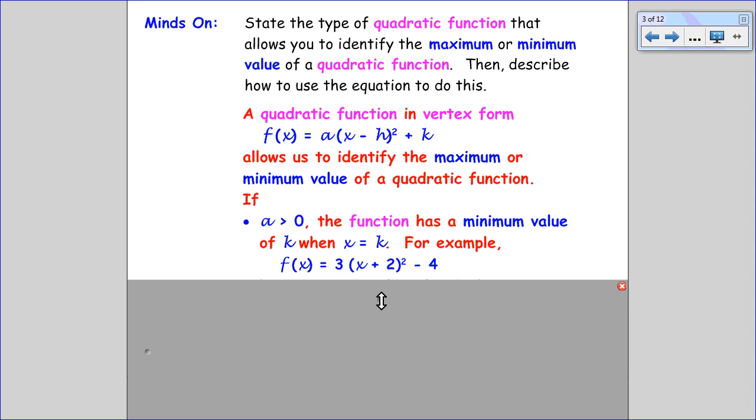For example, in the equation f(x) = 3(x + 2)² - 4, there's a minimum value of negative 4, and it happens when x equals negative 2.